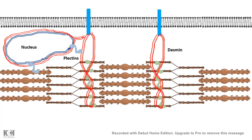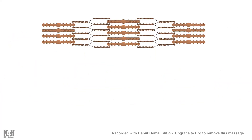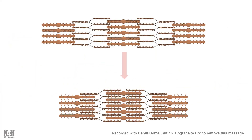Desmins are intermediate filaments found in muscle fibers. They connect the sarcomere with the Z-disc and also hold mitochondria and nucleus in position inside a contractile muscle. Plectins, which are intermediate filament-associated proteins, help to clip the desmins with the muscle sarcomere. This helps in muscle contraction, especially force contraction, and also protects muscles from damage.